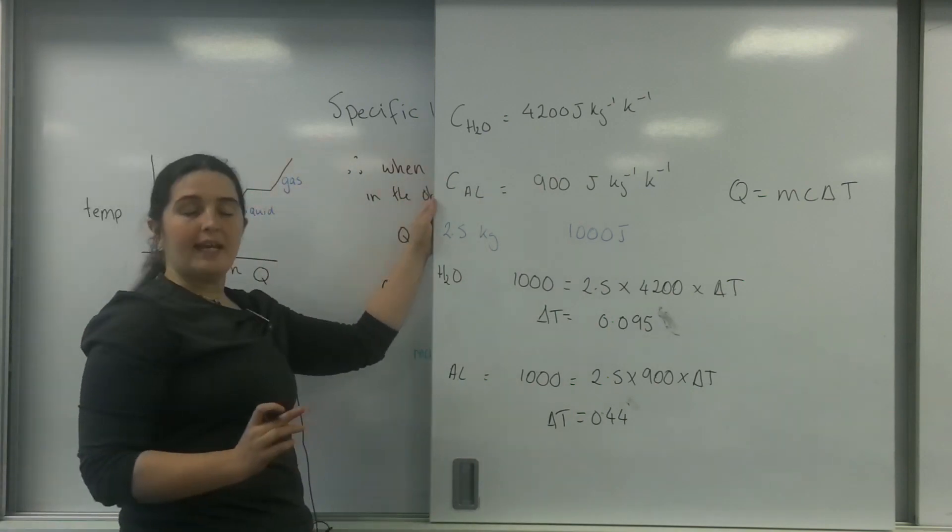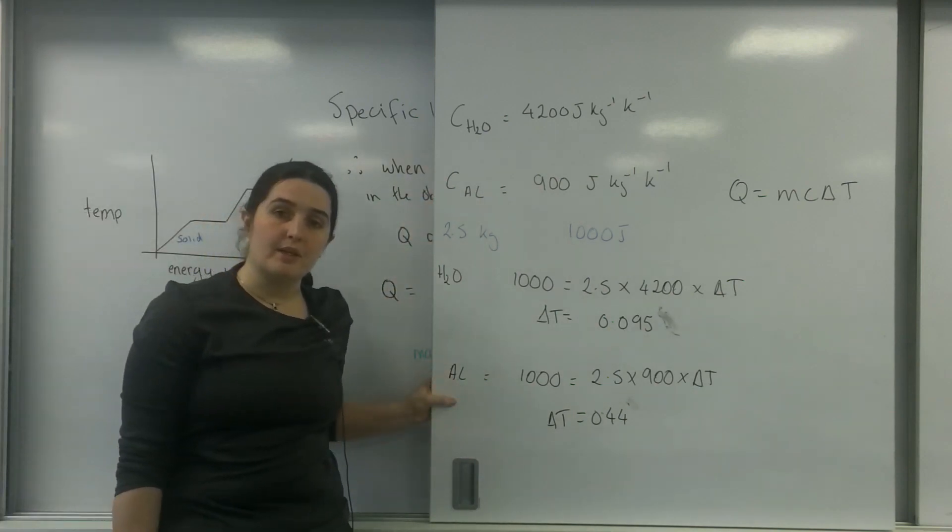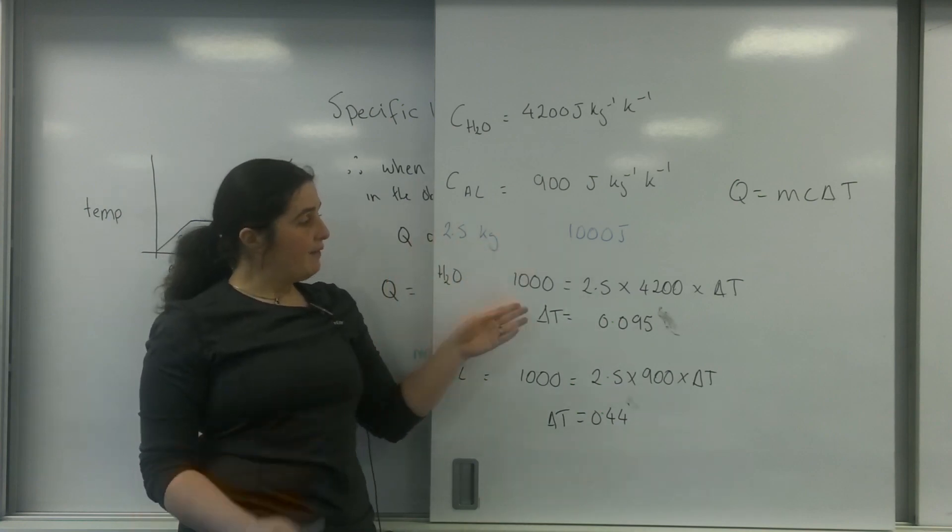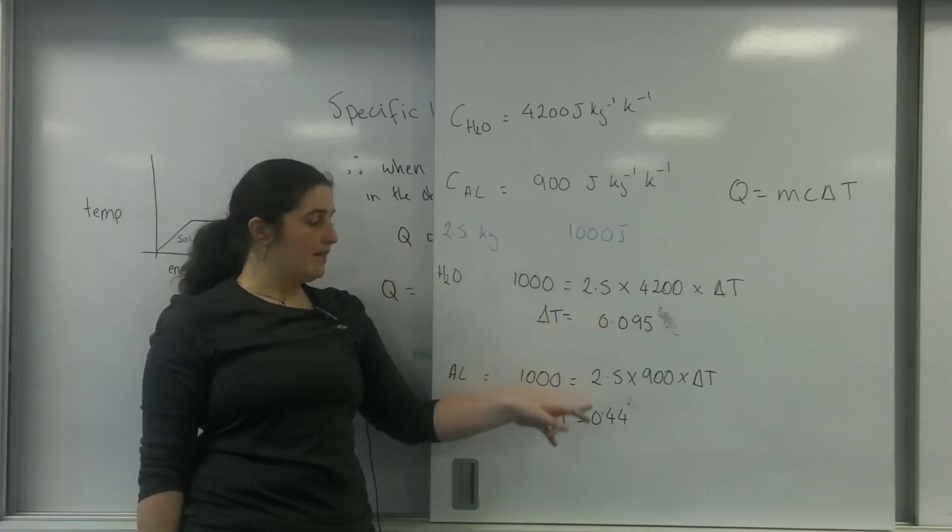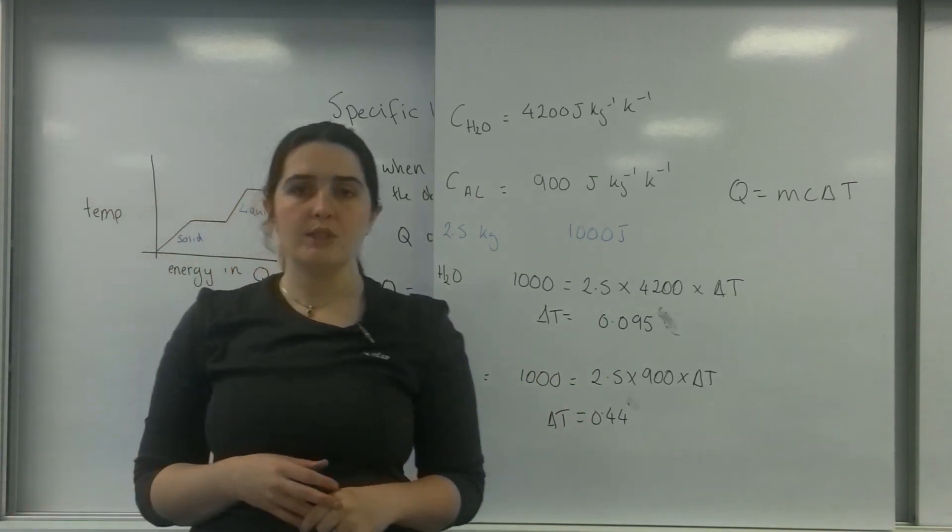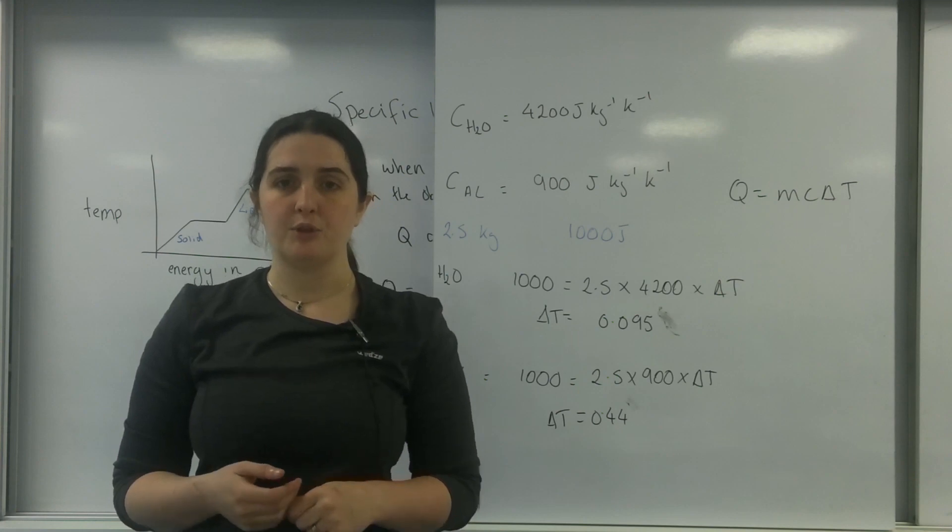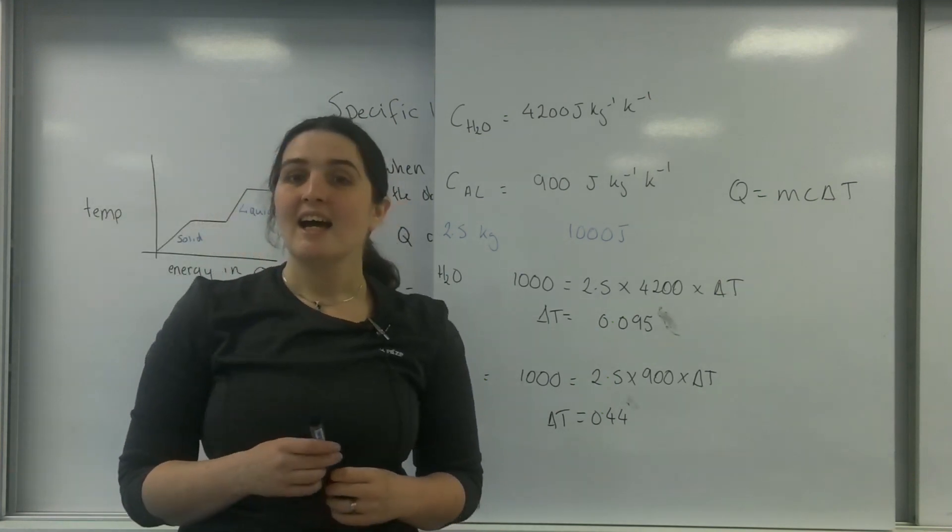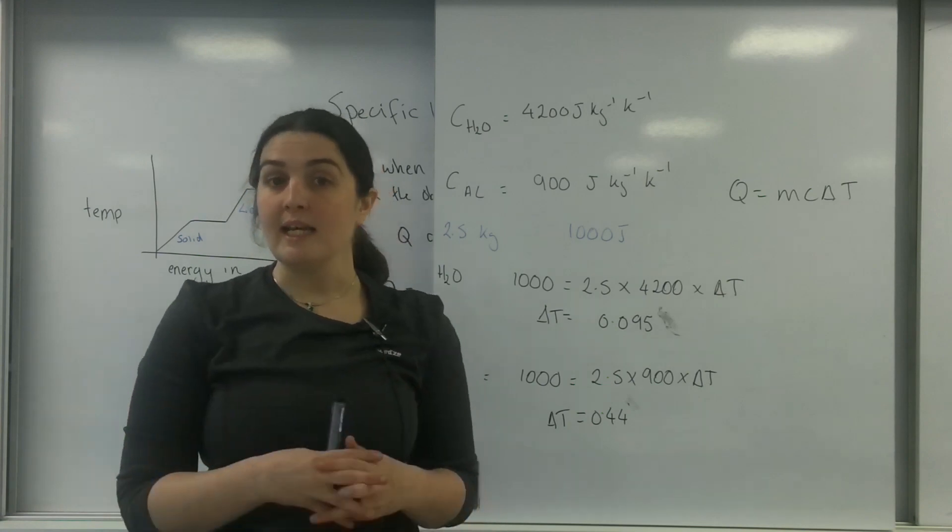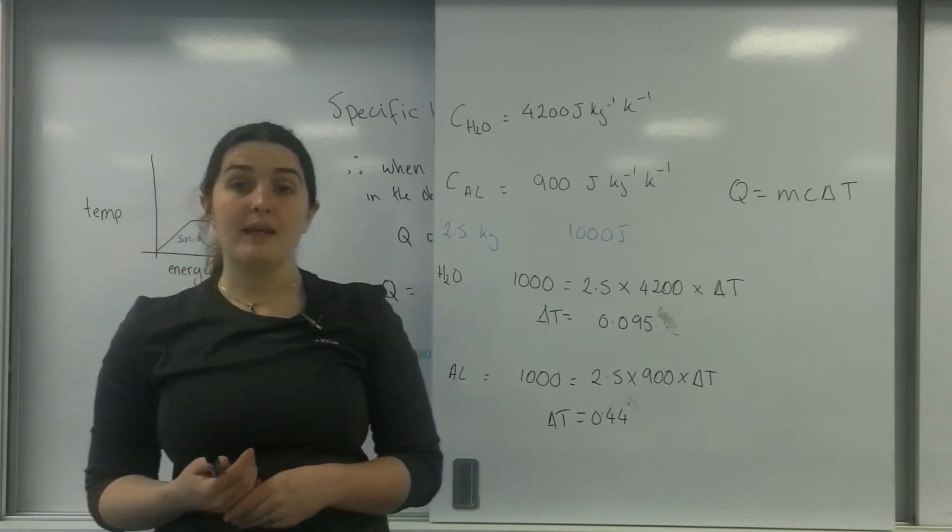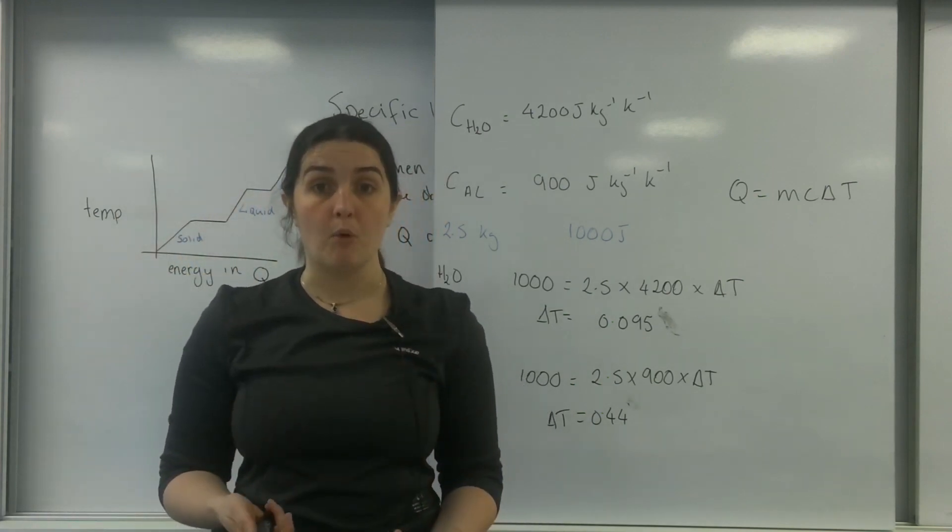I've got some water here and some aluminium. They both have different specific heat capacities, and if I put the same amount of energy in, I get very different temperature rises. If I get a kilogram of water and heat it up with 1,000 joules, it's only going to rise by about 0.1 degree, whereas if I took aluminium, an aluminium block, its temperature would increase more.